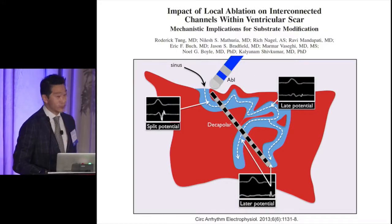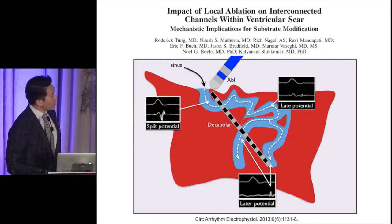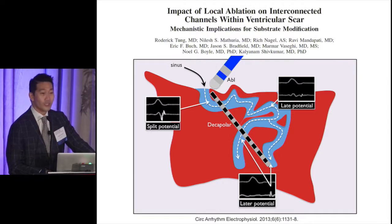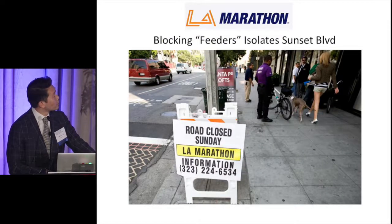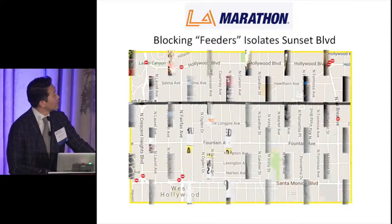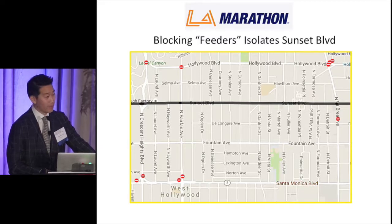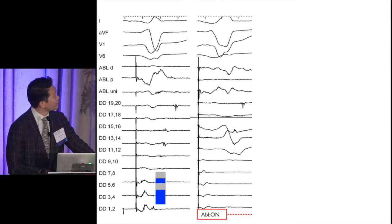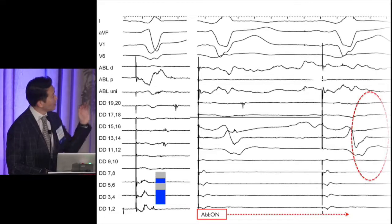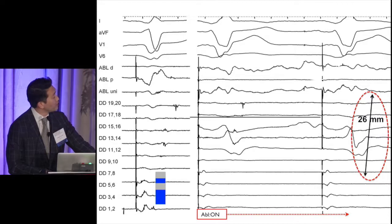In terms of de-channeling, we tried to answer whether ablating an earlier late potential can eliminate all downstream activation. Like the LA Marathon — you don't need to block every road, just the critical entrance points. It doesn't need to be carpet bombed if you can selectively find entrance sites into scar. Sometimes you hit one spot and all downstream potentials go away — demonstrated over a 26 millimeter distance when ablating a feeder late potential.